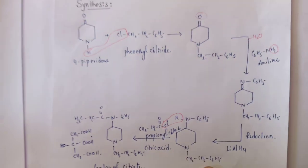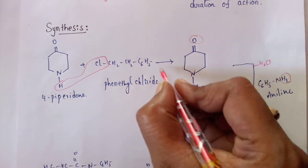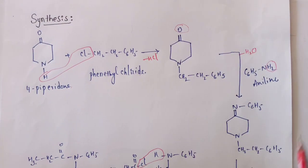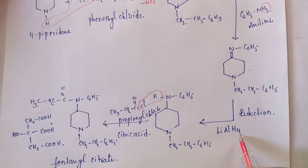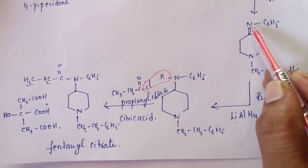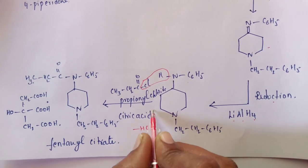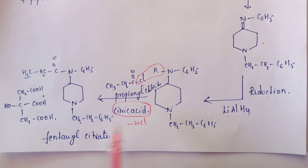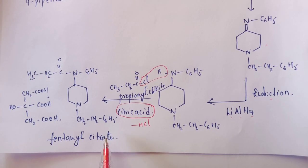To summarize the synthesis of fentanyl citrate: 4-piperidone (a ketone derivative) reacts with phenethyl chloride with loss of HCl, forming a ketone derivative. This is treated with aniline, losing water and forming an imine derivative. The imine undergoes reduction with lithium aluminium hydride or sodium borohydride, attaching two hydrogens. The reduced product is treated with propionyl chloride — loss of HCl gives fentanyl — which is then treated with citric acid to form the salt, fentanyl citrate.